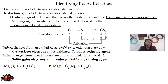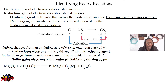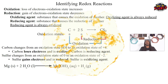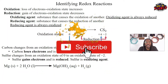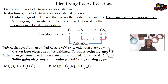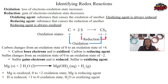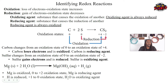Here's another example: magnesium reacting with water to form magnesium hydroxide and hydrogen gas. What is the reducing agent and oxidizing agent? Magnesium right now is zero — as we mentioned, free elements have an oxidation state of zero, so magnesium starts at zero.